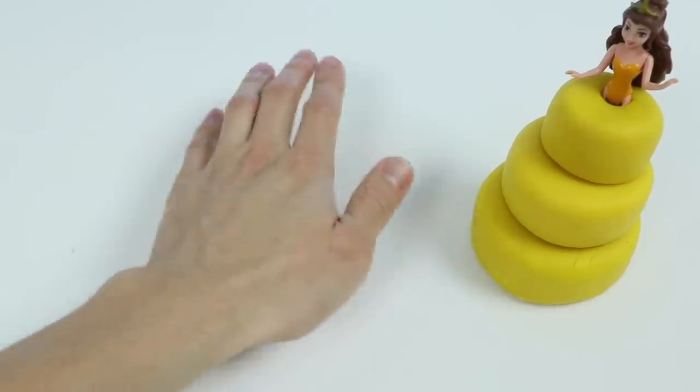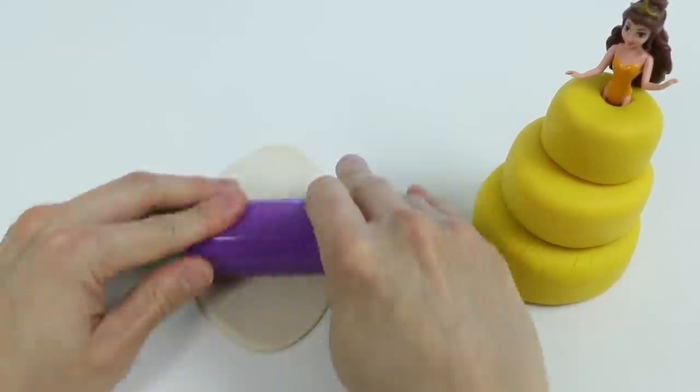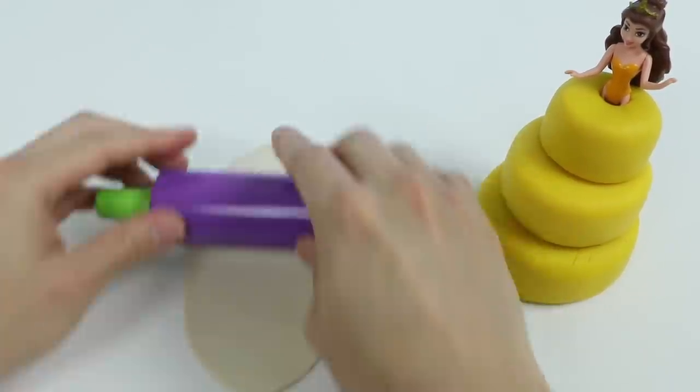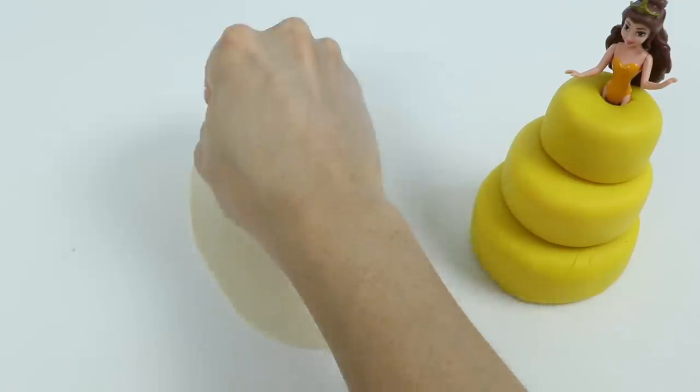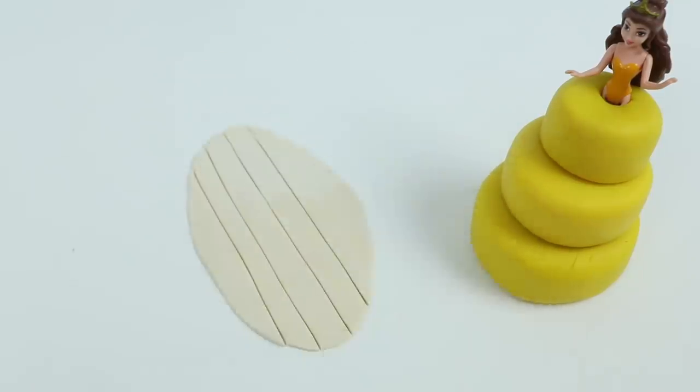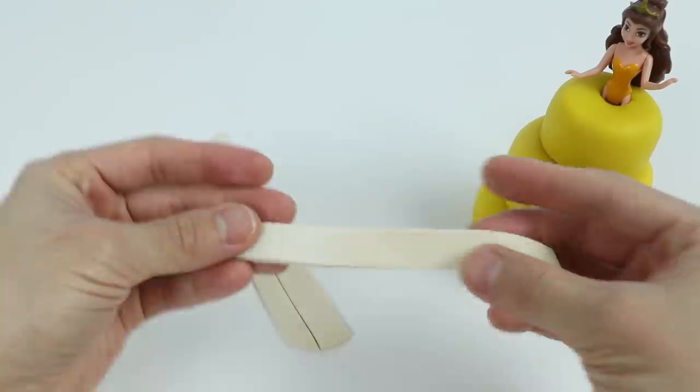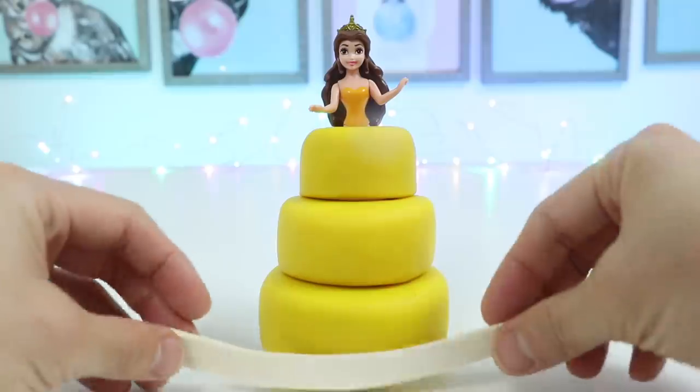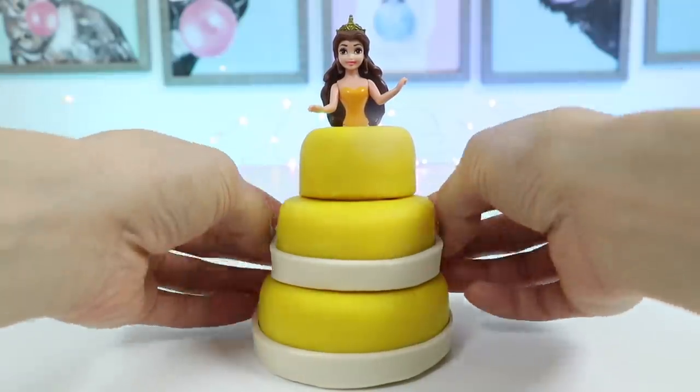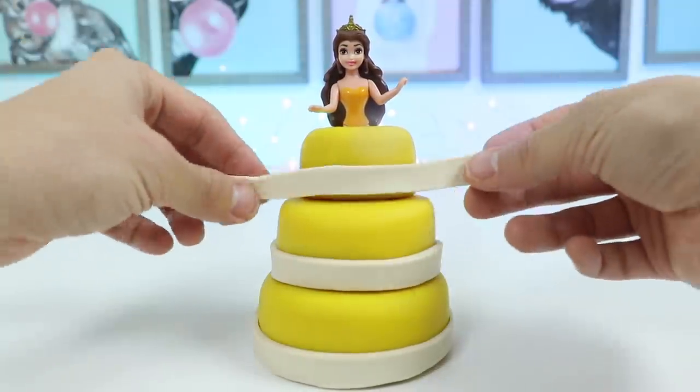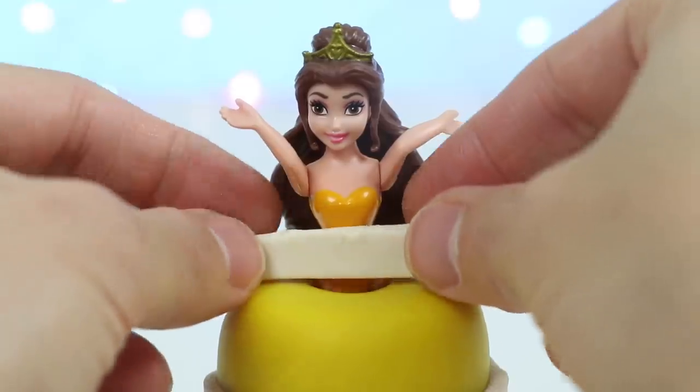Use this tool to make giant strips. Now we'll wrap one of these white strips around each cake layer. Give me a minute. And we'll also wrap a strip around Princess Belle too.